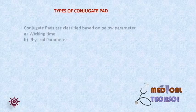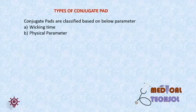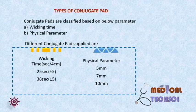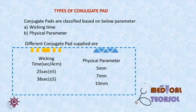Types of conjugate pad. Based on the wicking time and physical parameters, conjugate pads are classified. Wicking time is the time taken to move the sample a definite distance by capillary action, usually measured in seconds. Different conjugate pads are applied based on wicking time — for example, 25 seconds or 30 seconds per 4 cm. Based on physical parameters, 5 mm, 7 mm, and 10 mm conjugate pads are available.